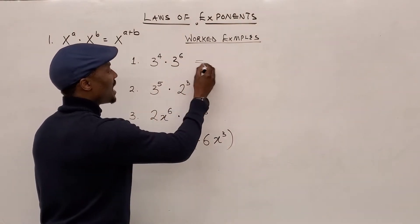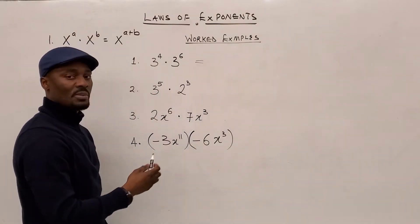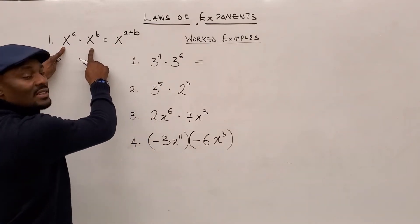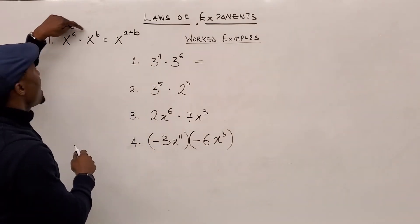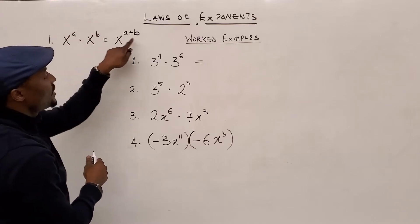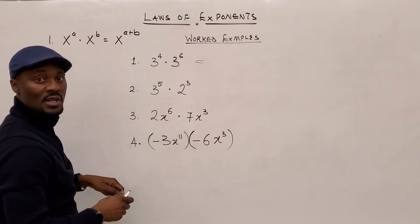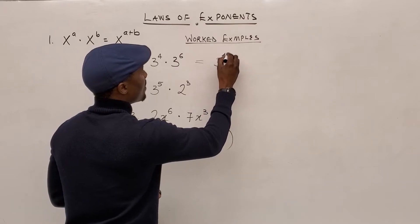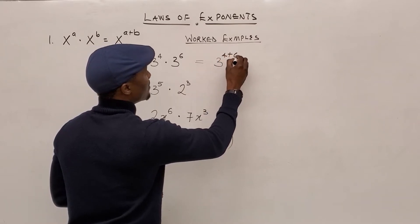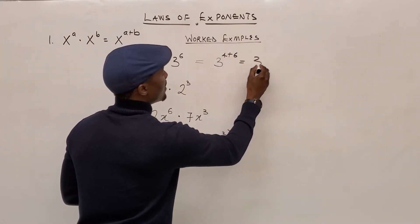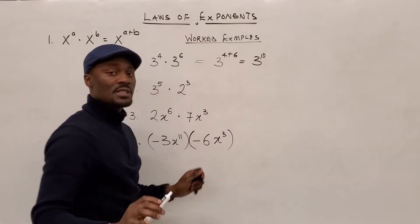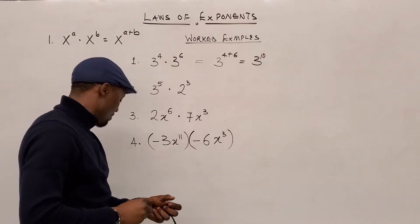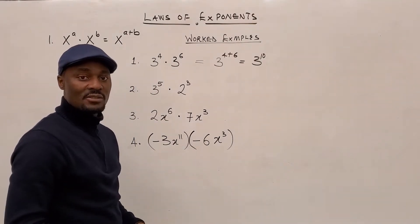The first one says 3 to the 4th multiplied by 3 to the 6th — and that looks exactly like this. So our 4 will be A and B will be the 6th. We just need to add the powers together. So that gives us 3 to the 4 plus 6, which gives us 3 to the 10th. That's all you need to do. You're done with that.